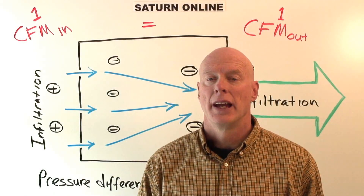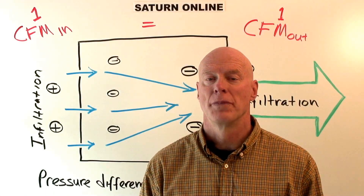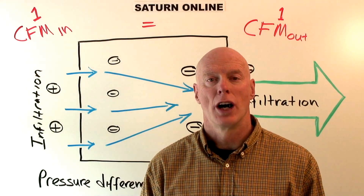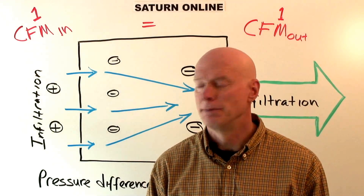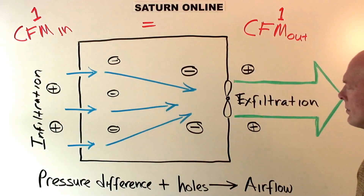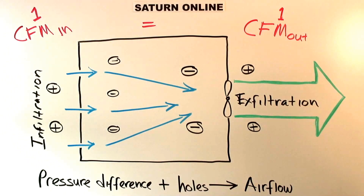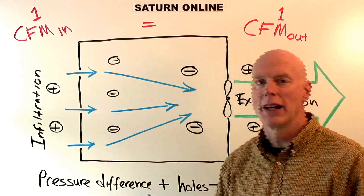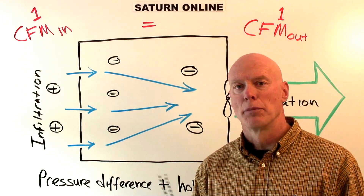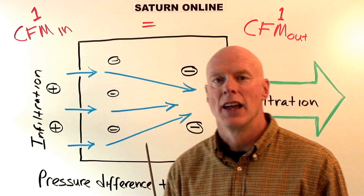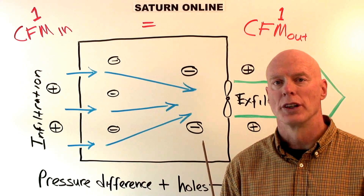I want to explain air pressure and flow, and how air flows through buildings caused by pressure differences. If we have an air pressure difference and we have some holes, then we're going to have air flow through those holes. One way we can create a pressure difference is with a fan — that's what we do during blower door testing.